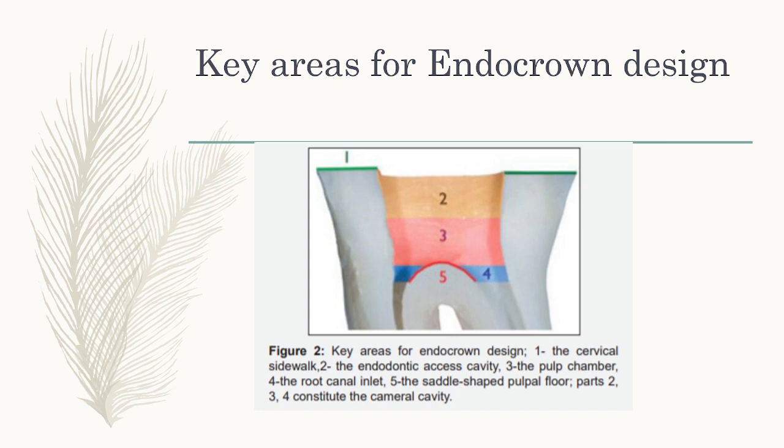These are the key areas for endocrown design: number one is the cervical sidewall or butt joint; number two is the endodontic access cavity; number three is the pulp chamber; number four is the root canal inlet. The saddle-shaped effect of the pulp chamber floor increases retention and resistance of the endocrown. The pulp chamber should have at least 3 mm depth for the endocrown.